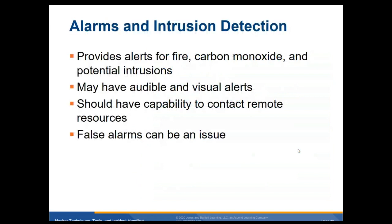Alarms and intrusion detection provide alerts for fires, carbon monoxide, and potential intrusions. They may have audible and visual alerts so you know the alarms are going off. They should have the capability to contact remote resources — so if a fire alarm goes off it should also be contacting the fire department, and if an intrusion detection system goes off it should also contact the police. False alarms can be an issue, so you don't want something that can trip it and be like a false positive.